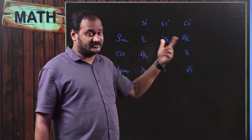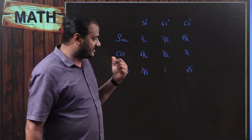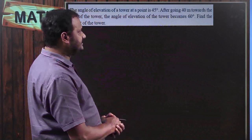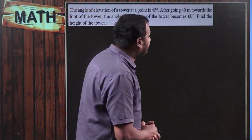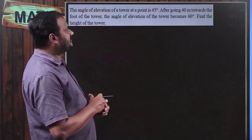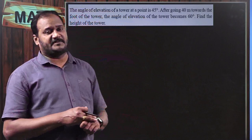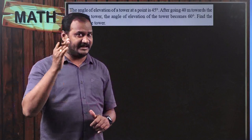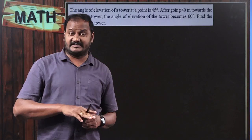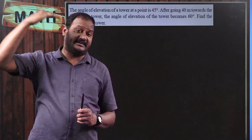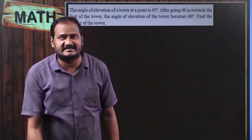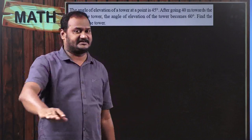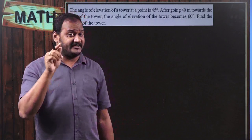Let us get into problems from previous board examinations. Before solving, note that heights of objects like towers, buildings, or mountains are represented as vertical lines, always perpendicular to the horizontal base. If the height of the observer is not mentioned in the problem, you consider the observer as a single point on the ground. These are very important things to remember.